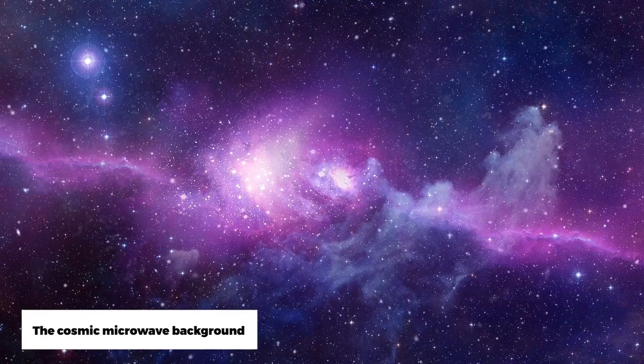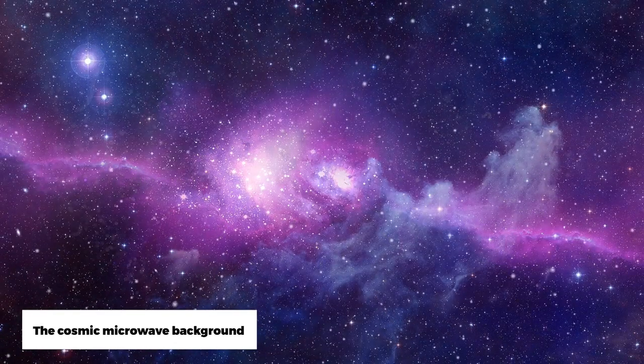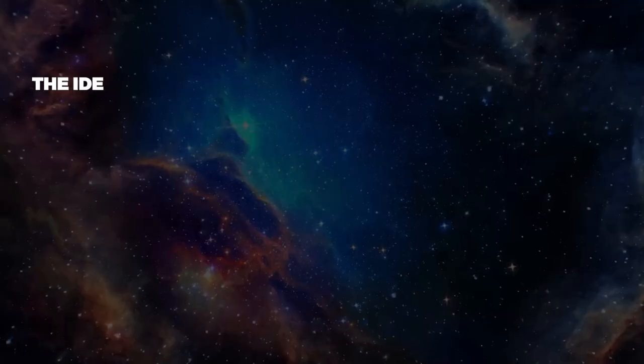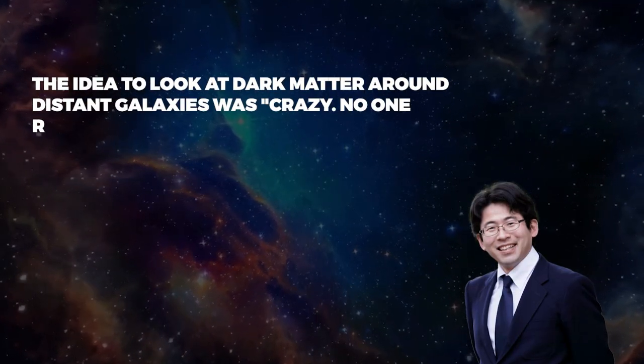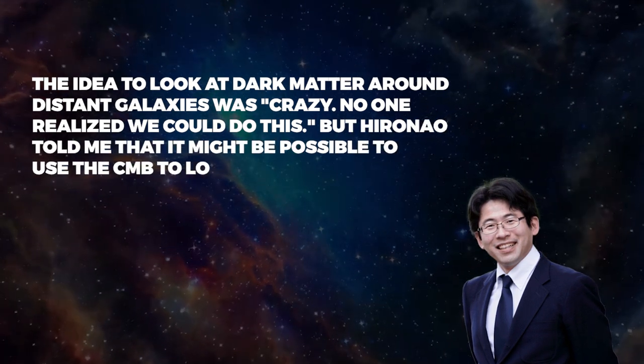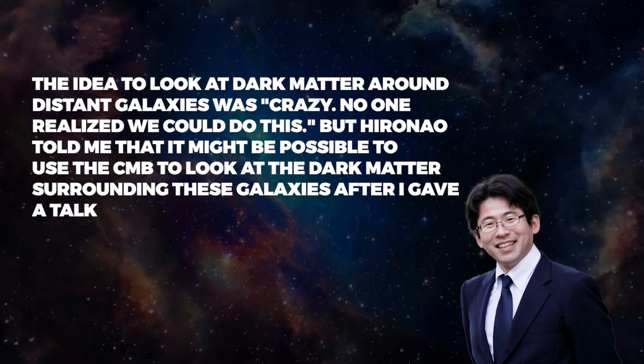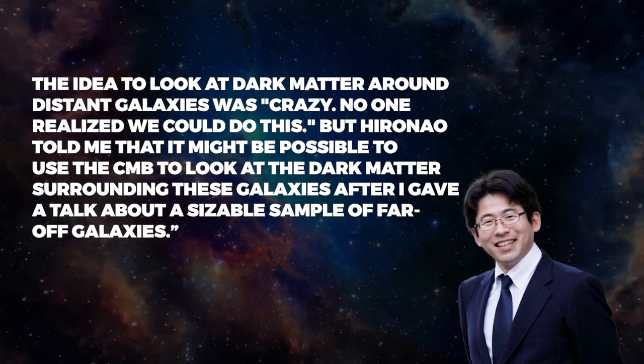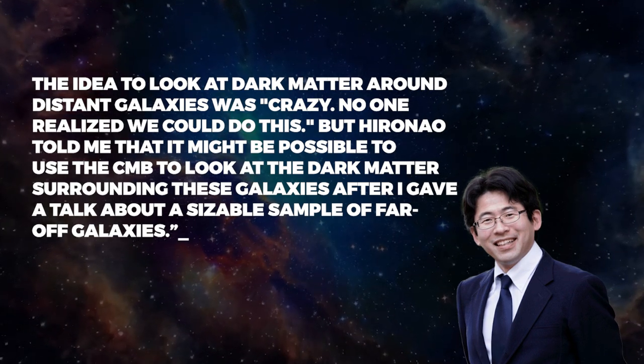The Cosmic Microwave Background, or CMB, a type of fossil radiation left over from the Big Bang that is dispersed throughout the entire cosmos, is the key to mapping dark matter in the very early universe. Masami Ouchi, a professor at the University of Tokyo, said in a statement that the idea to look at dark matter around distant galaxies was crazy. No one realized we could do this. But after a talk about a large sample of far-off galaxies, it may be possible to use the CMB to look at the dark matter surrounding these galaxies.